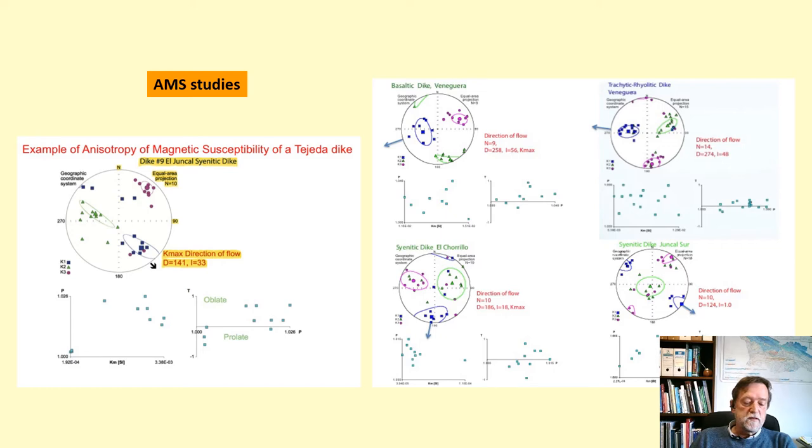Three main types of magnetic fabrics were found. In fabric type A, the plane formed by the maximum and intermediate susceptibility axis is parallel to the dike plane. This fabric type represents the magma flow direction within the intrusives and is the dominant one, observed in 60% of all the intrusives.